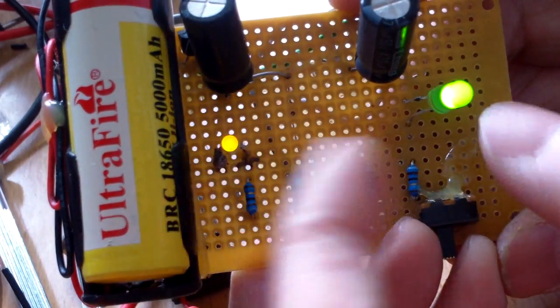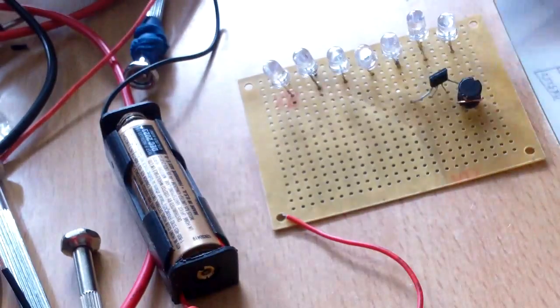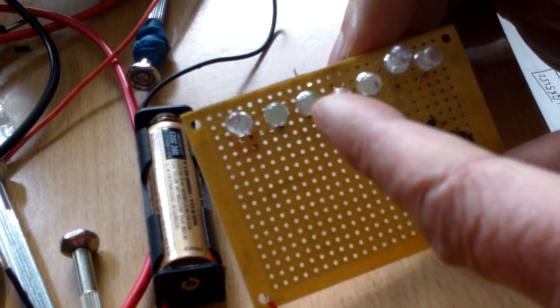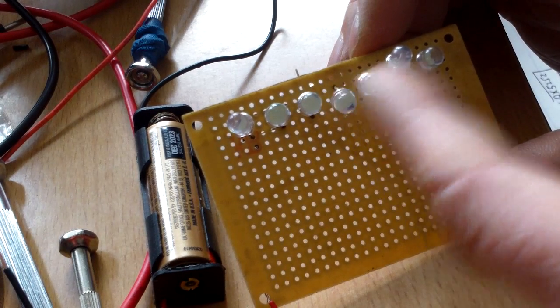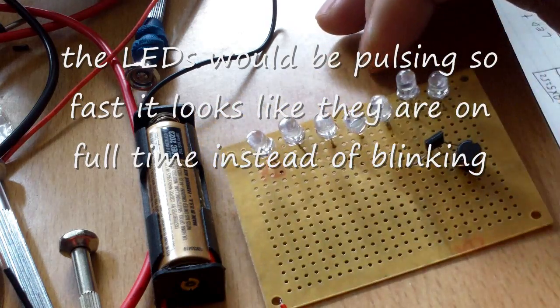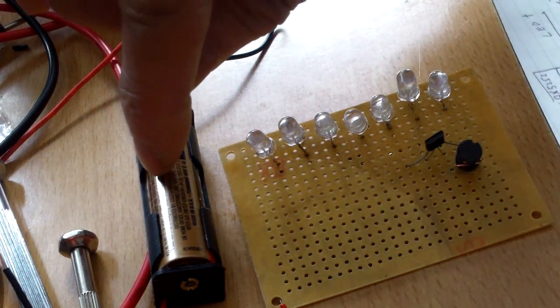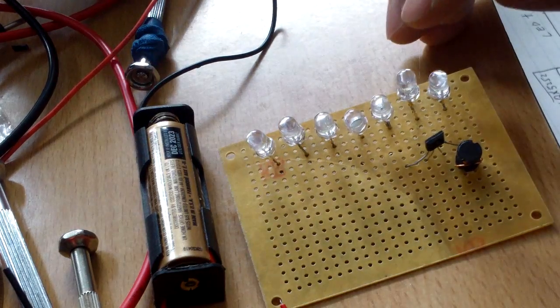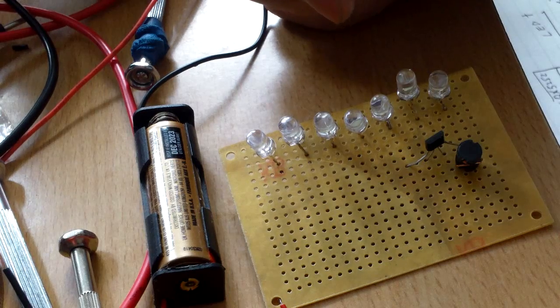It blinks. It is slowly blinking, but the idea behind this is the same as this, except the LEDs are blinking so fast, oscillating so fast you can't see it. So you can use one single battery to power this. This uses the back EMF or electromagnetic force.